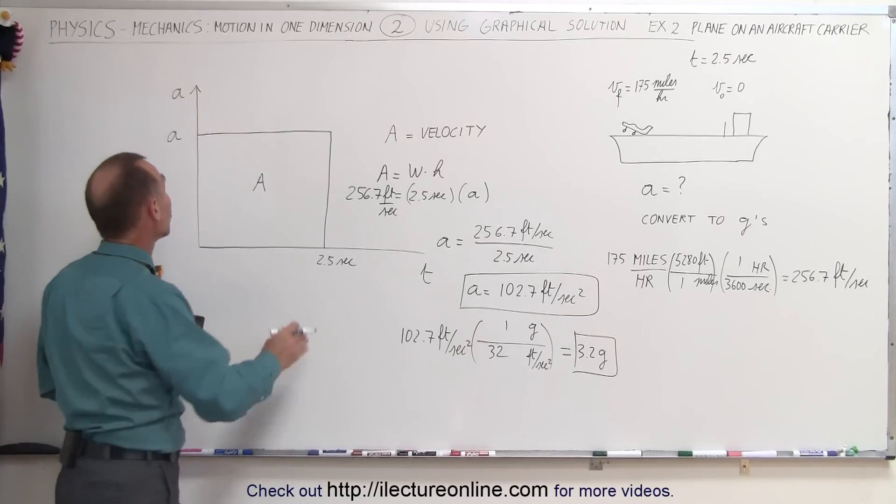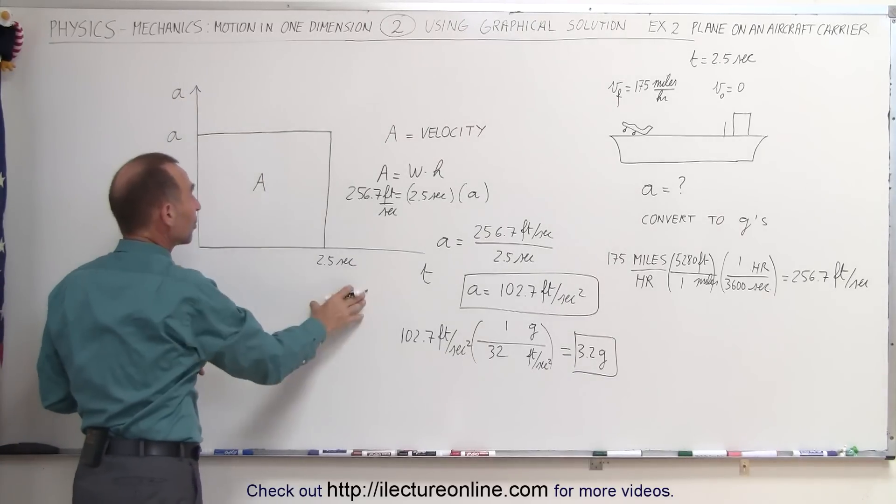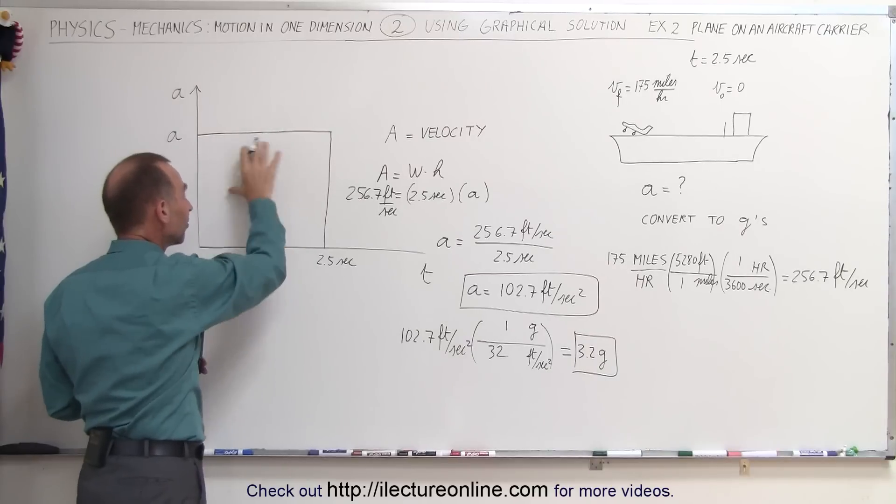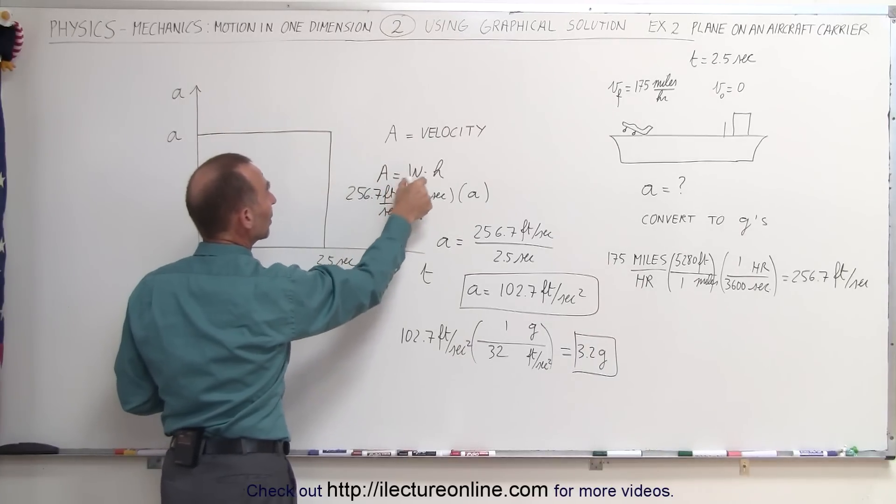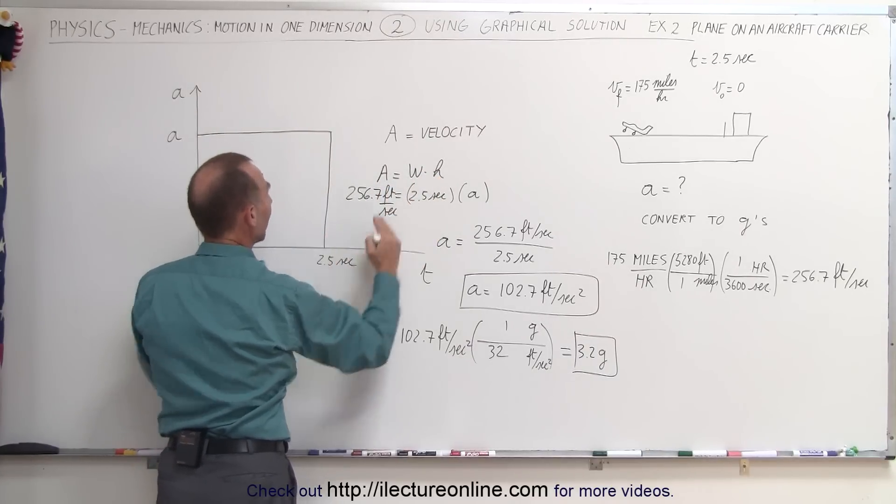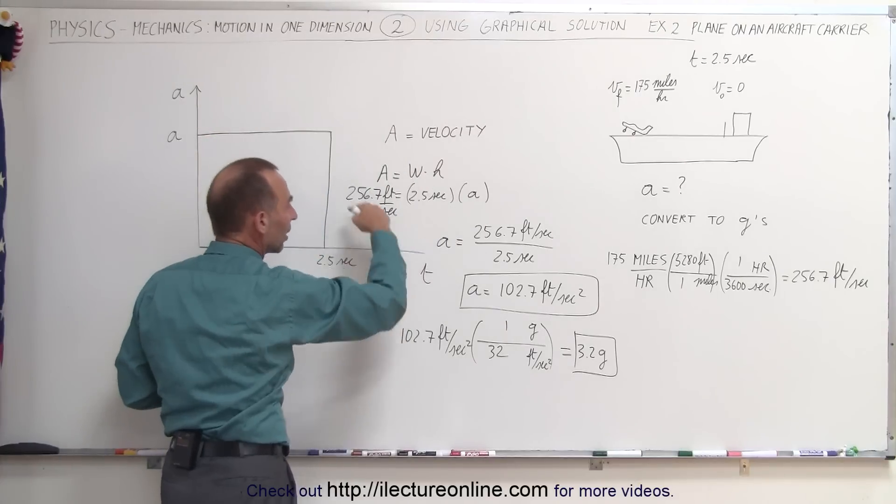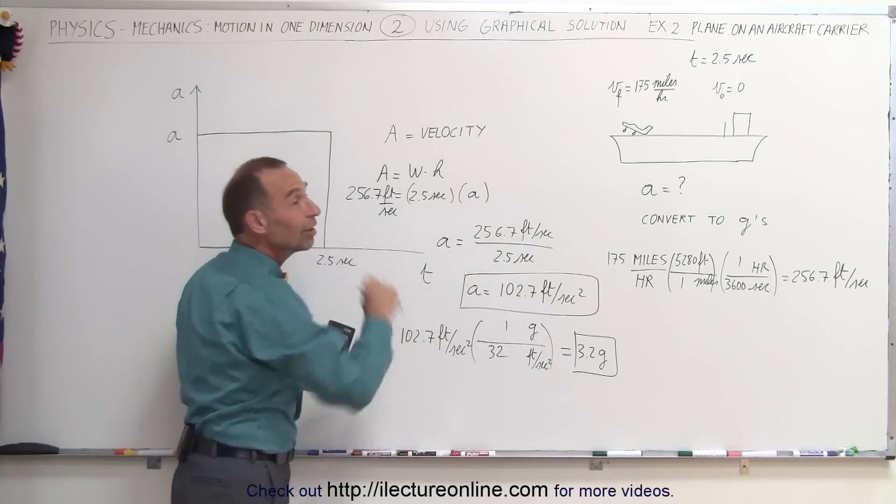But again, the technique simply is drawing an acceleration versus time graph. The area represents velocity. So the area, which is the velocity, equals the width times the height. The width is time, and the height is acceleration. And that allows us to find the acceleration using this graphical technique.